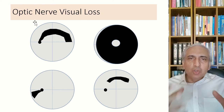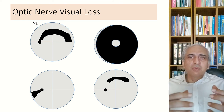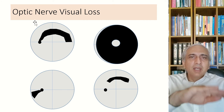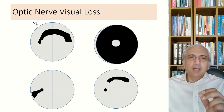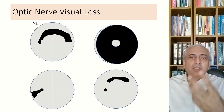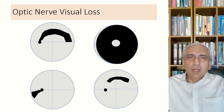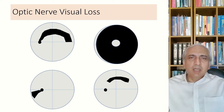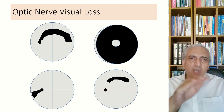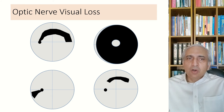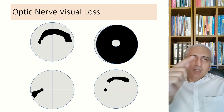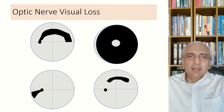Visual field effects differ between optic nerve and macular dysfunction. An arcuate scotoma sparing the macula is typical of optic nerve disease. Tunnel vision suggests advanced glaucoma. A temporal wedge defect or arcuate scotoma in Bjerrum's area are features of glaucomatous visual fields. A central defect is characteristic of macular disease.